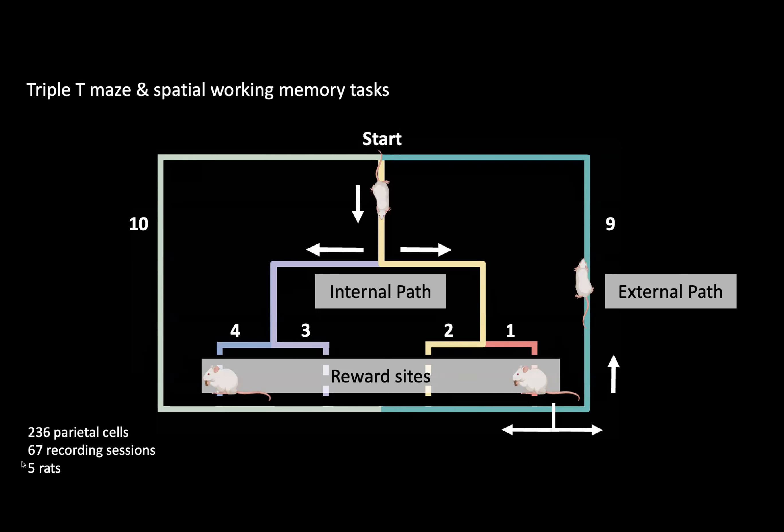So we developed a task that puts the rat in this context. This task requires the rat to remember for a longer duration of time where they have been and where they plan to go. In our experiment, we used a triple T maze with four embedded internal pathways marked as one, two, three, and four. Reward sites are located at the end of each internal path. There are also two external paths, 9 and 10, for the rat to return to the starting point from reward sites. The rat is required to navigate through the internal path to the reward site without turning back, and receives rewards when revisiting sites only after collecting all other rewards.